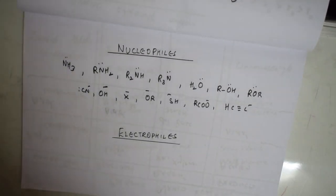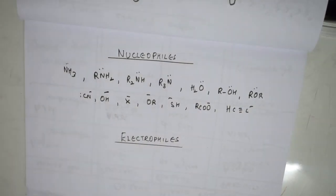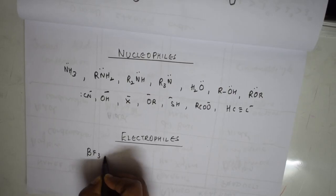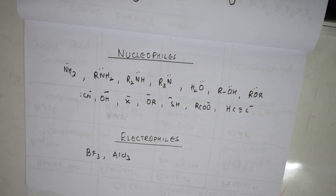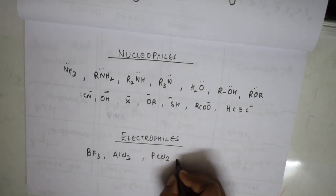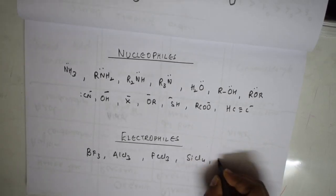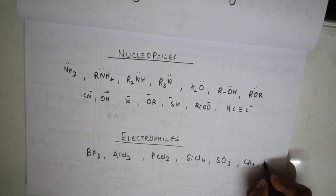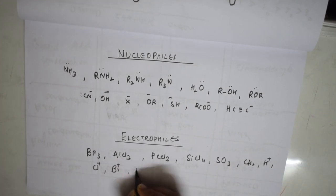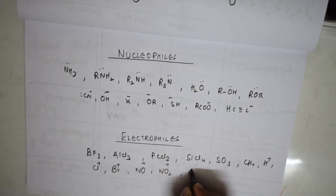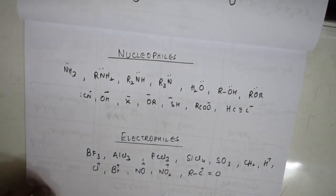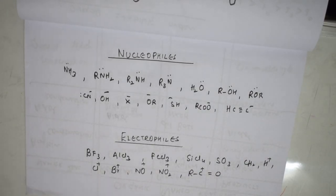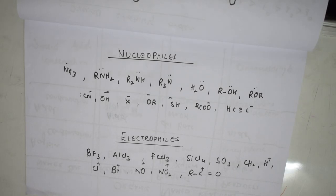Electrophiles are electron-deficient species — Lewis acids that accept electrons. Common electrophiles we have studied include BF₃, AlCl₃ (used in Friedel-Crafts reactions), FeCl₃, SiCl₄, SO₃, carbenes (CH₂), H⁺, Cl⁺, Br⁺, NO⁺, NO₂⁺, and RC⁺=O (acylium). These are all electron-deficient and keep accepting electrons.